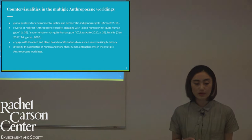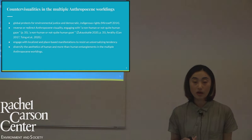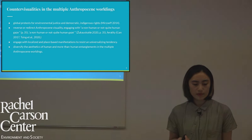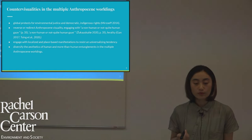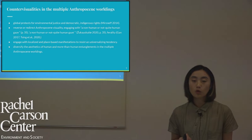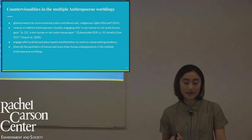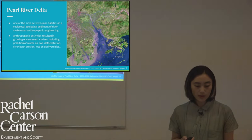Therefore, Anthropocene visualities are charged with hierarchical biopolitics and geopolitics. How can we configure a counter-visuality of the Anthropocene? Apart from what Mirzoeff points out — shedding light on global protests for environmental justice and democratic indigenous environmental rights — we can also engage with what other scholars termed as reversed or redirected Anthropocene visuality, adopting a non-human or not-quite-human gaze, and argue for localized, place-based manifestations to resist universalizing tendencies and diversify the aesthetics of human and more-than-human entanglement in multiple Anthropocene worldings.